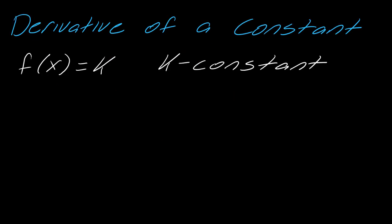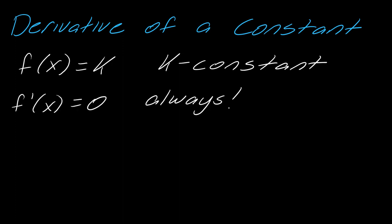Let's start out with the derivative of a constant. If you have a function that equals just a number — any constant you want — then the derivative of that constant is always equal to zero.